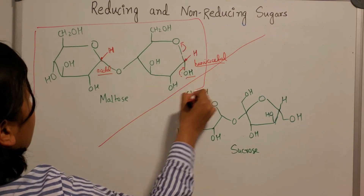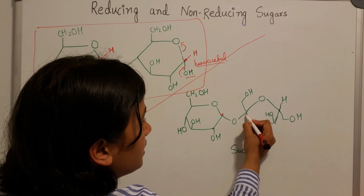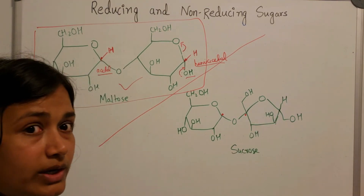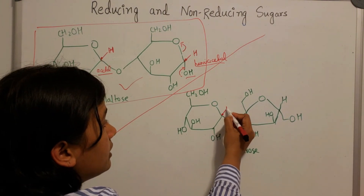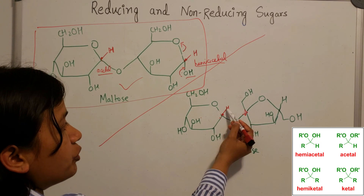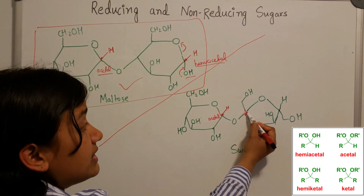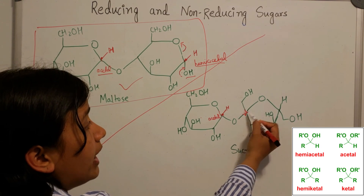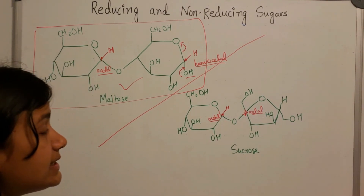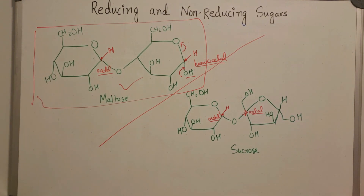Even though one of the two anomeric centers in maltose is an acetal, the presence of even one hemi-acetal center means that maltose is overall a reducing sugar. Moving on to sucrose: the first anomeric center is coming from an aldehyde (R and H) and both hydroxides are protected — this is an acetal. The second anomeric center is coming from a ketone (both substituents are R) and both hydroxides are also protected — this is a ketal. Since both centers are fully protected with no hemi-acetal or hemi-ketal, sucrose is not a reducing sugar.